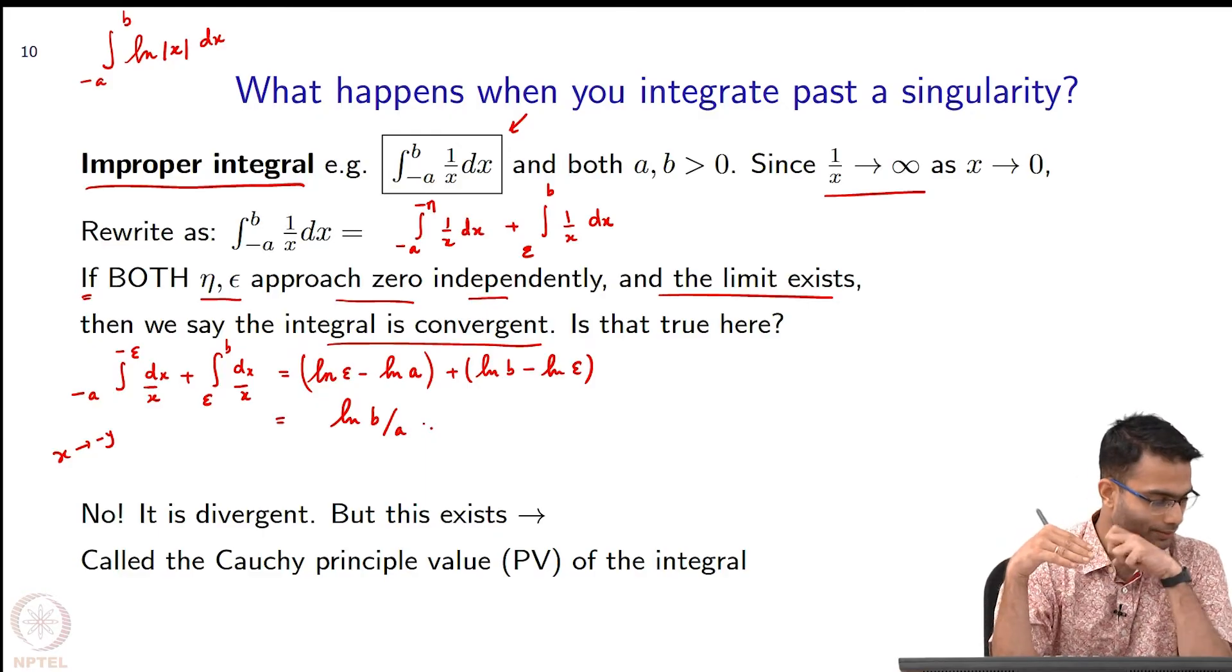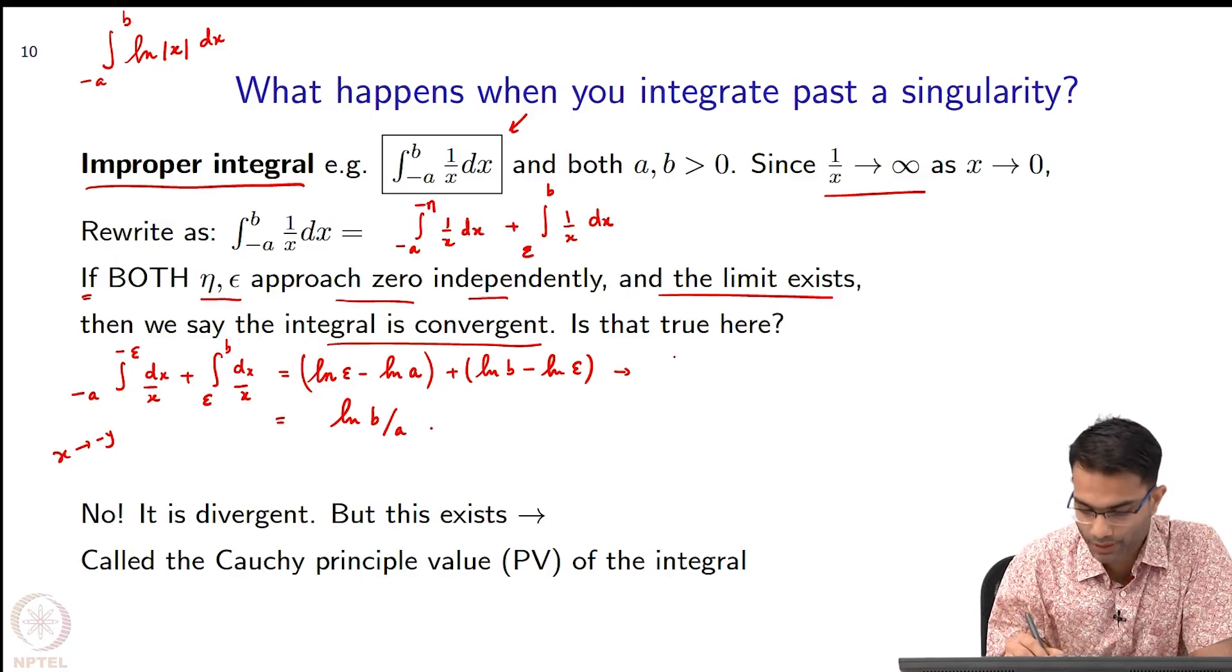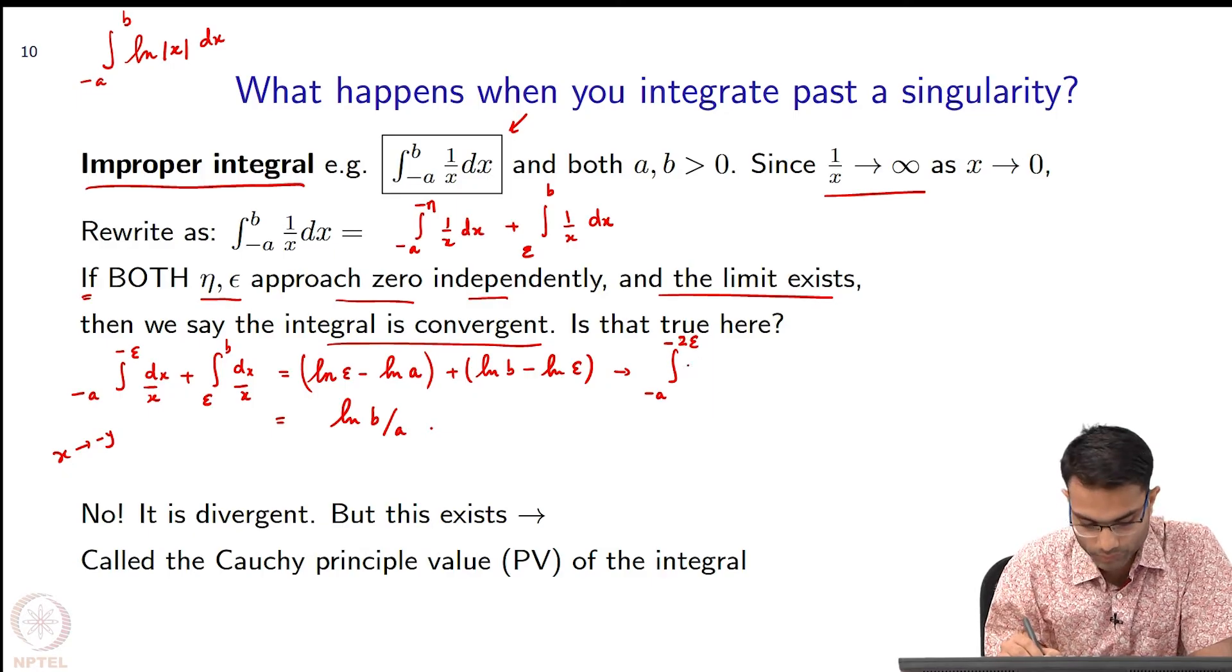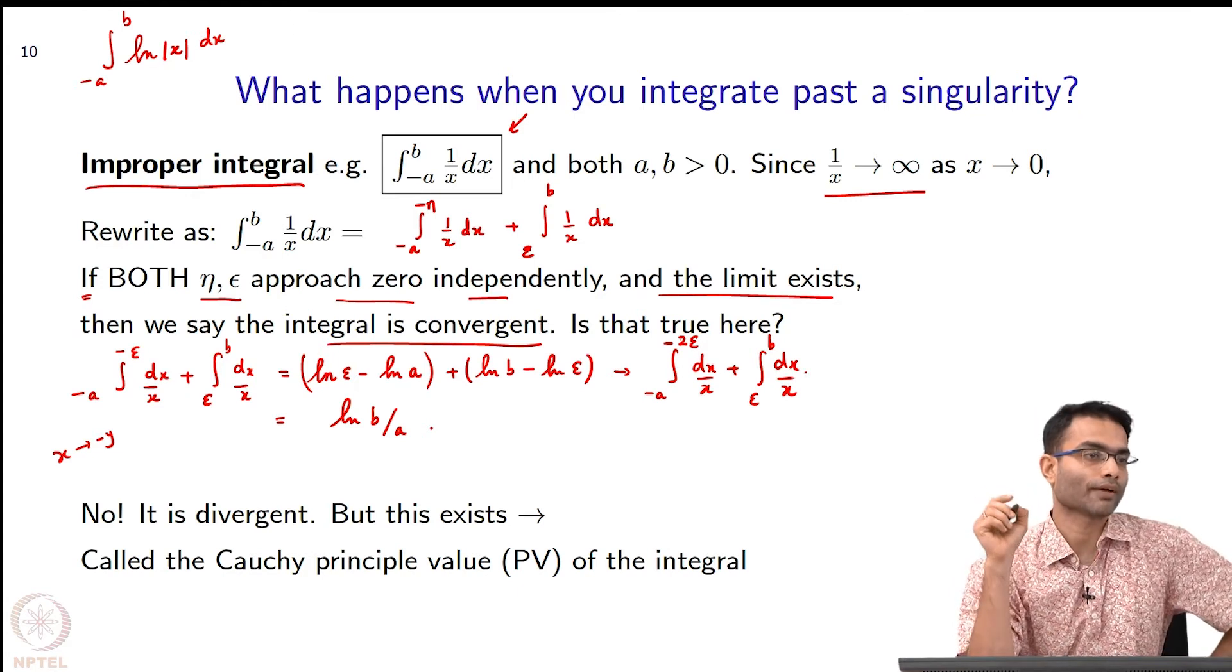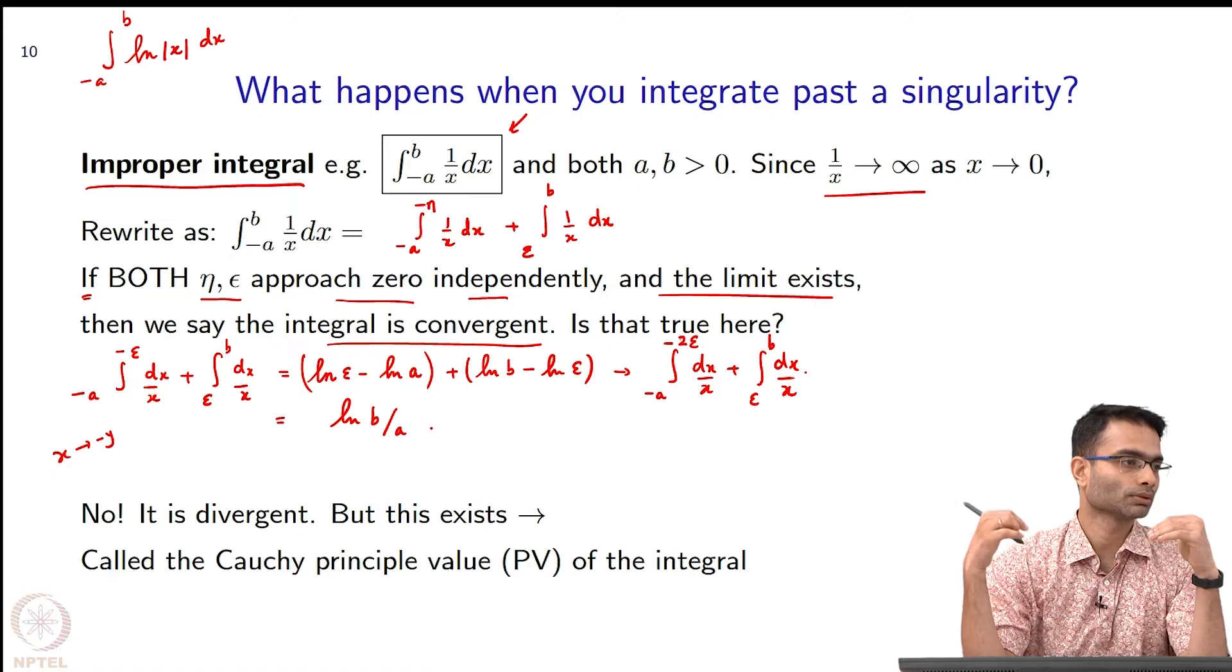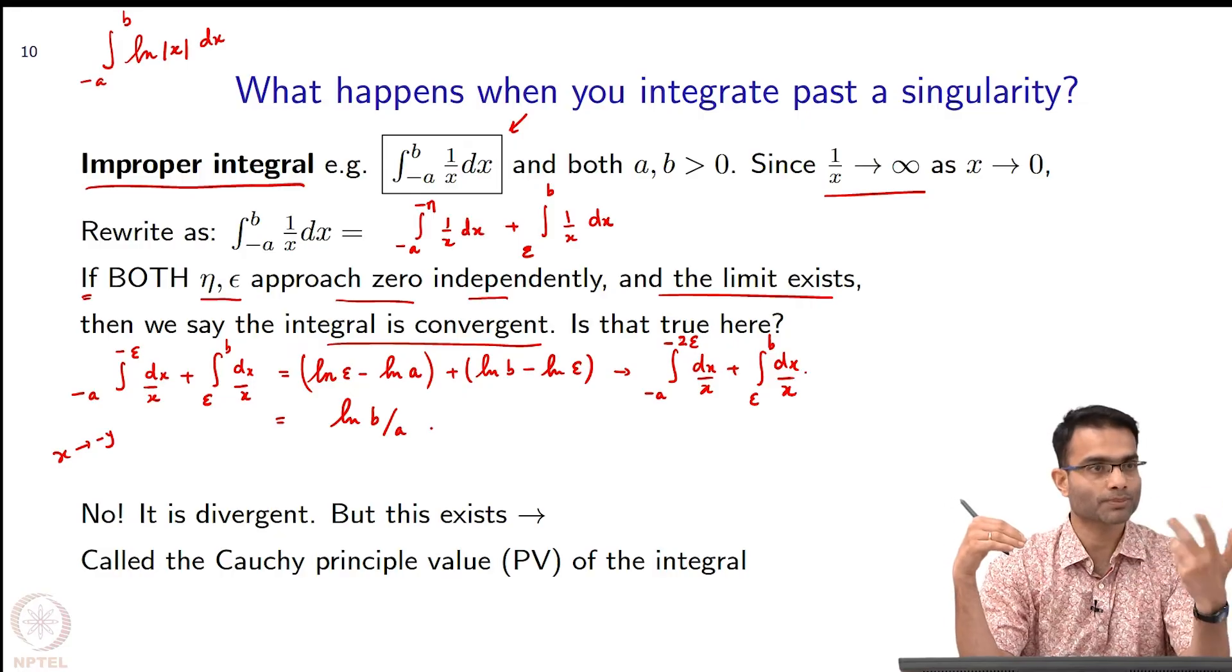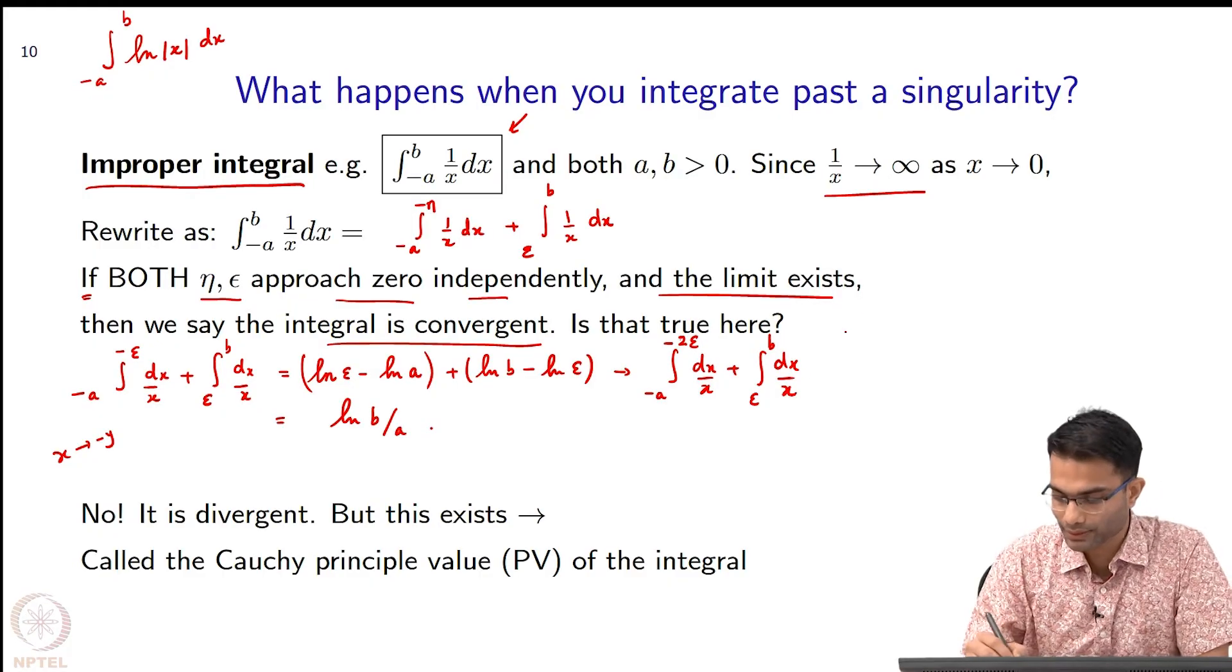Supposing I played a little trick. Let me instead do this as minus a to minus 2 epsilon, dx by x, plus epsilon to b, dx by x. What have I done? I have gone back to eta - I am calling it 2 epsilon. Now, is eta approaching 0 faster or slower? As epsilon tends to 0, eta is 2 epsilon, so eta is approaching faster. Epsilon is going to 0 at some rate and eta is going at twice the rate. Now, when I evaluate this integral what do I get?